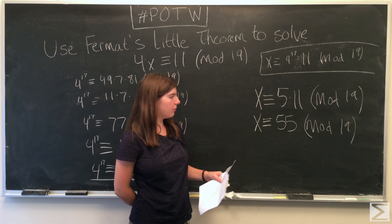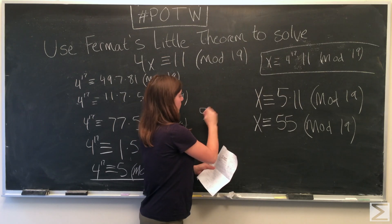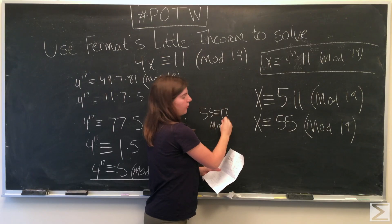And now we have x is congruent to 55, and our last step is to reduce it one more time. When 55 is divided by 19, there's a remainder of 17, since 55 is congruent to 17 modulo 19.